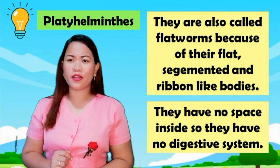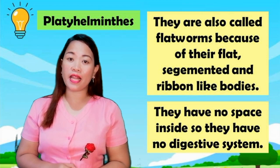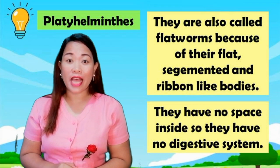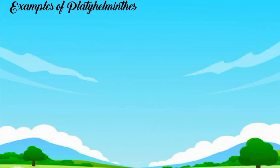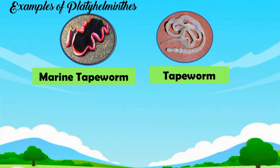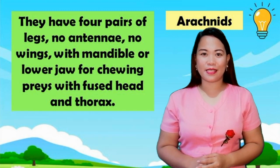Platyhelminths are called flatworms because of their flat, segmented, and ribbon-like body. They have no space inside, so they don't have a digestive system. Examples of platyhelminths: marine tapeworm, tapeworm.